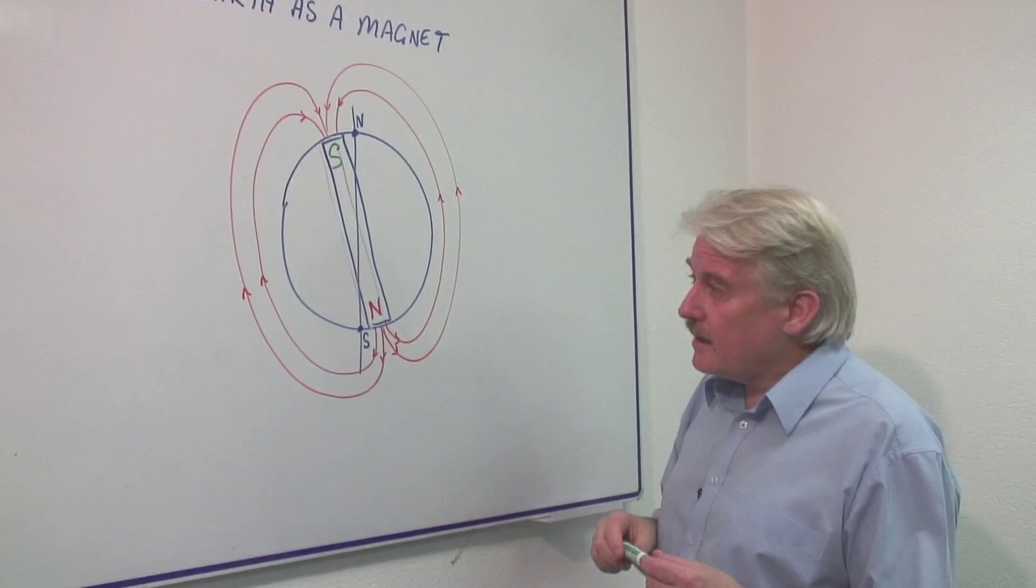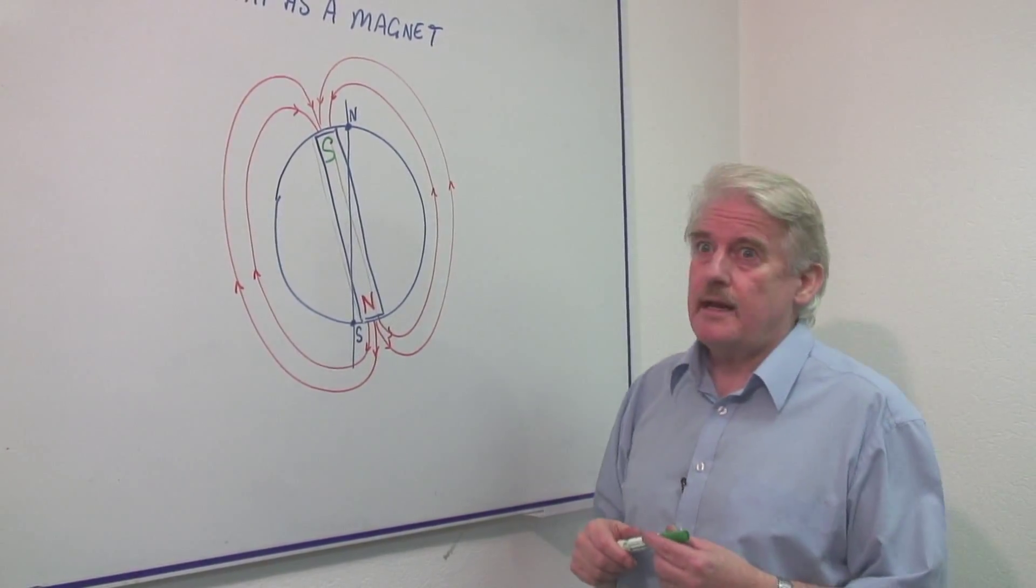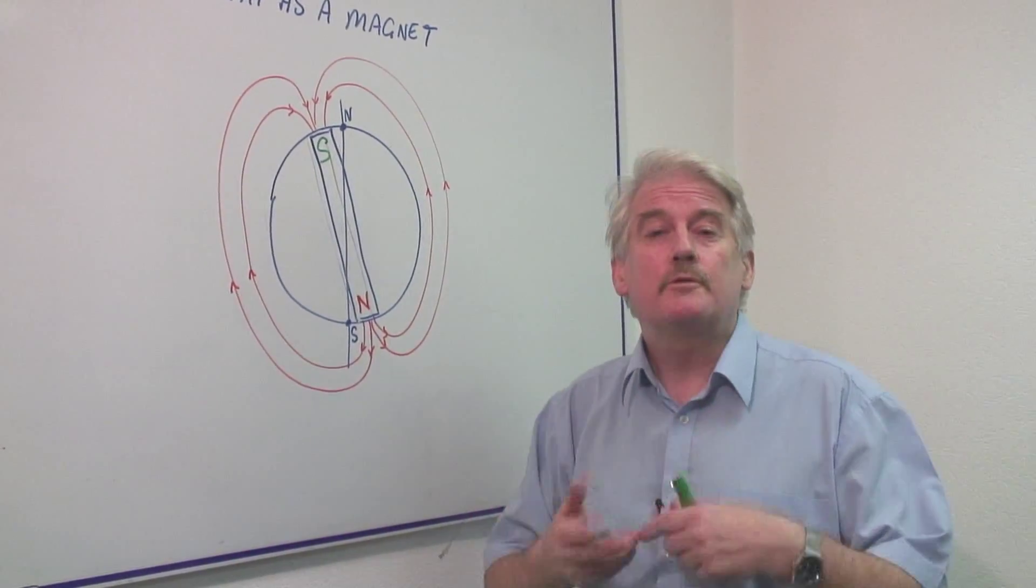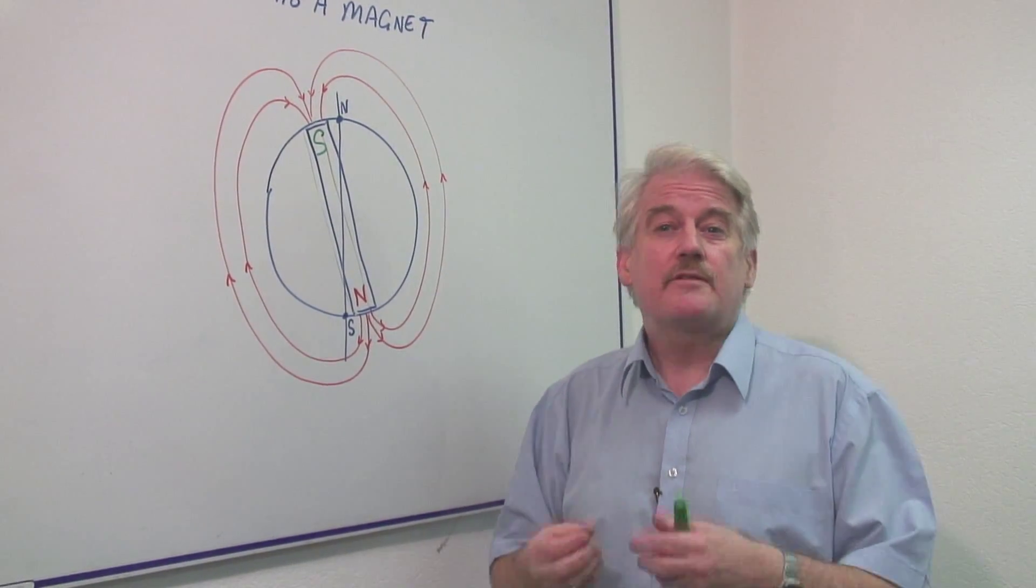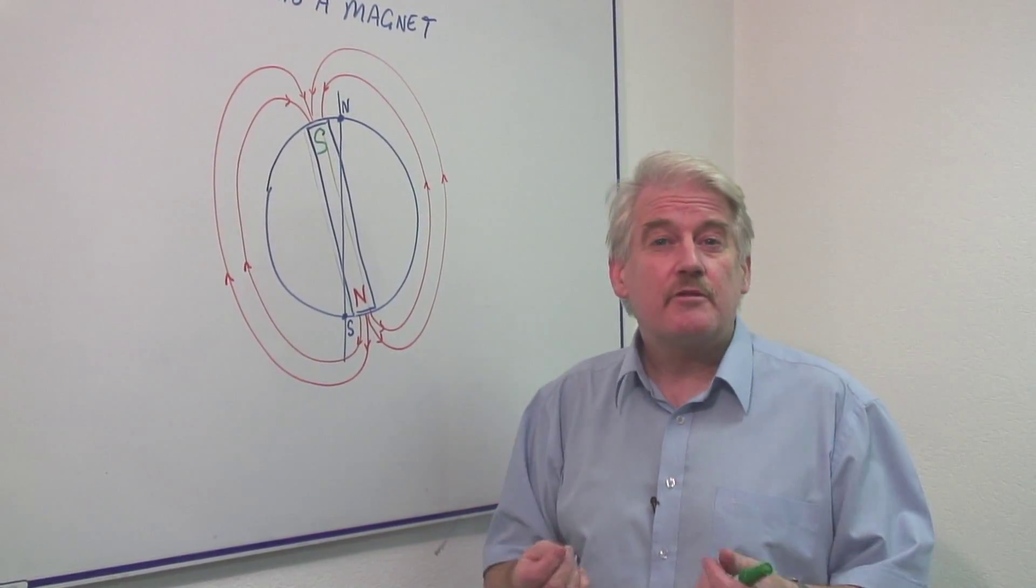The reason it behaves like a magnet is because magnetism is about the movement of electrons. It's created by the movement of electrons and electrons are in every material.